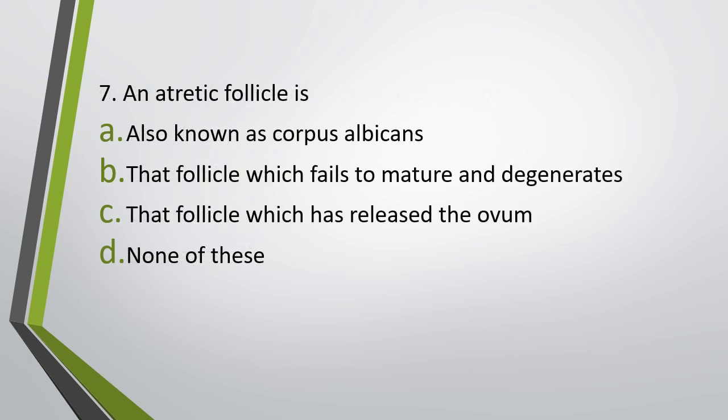Question number seven. An atretic follicle is: also known as corpus albicans, that follicle which fails to mature and degenerates, that follicle which has released the ovum, or none of these. Correct answer is option B — it refers to that follicle which fails to mature and degenerates.